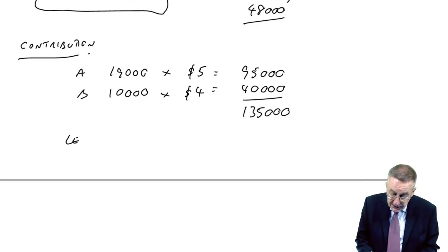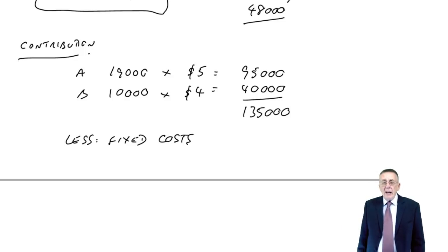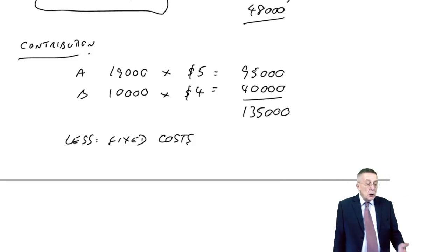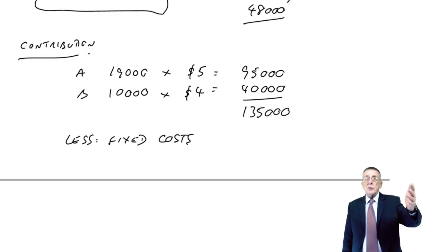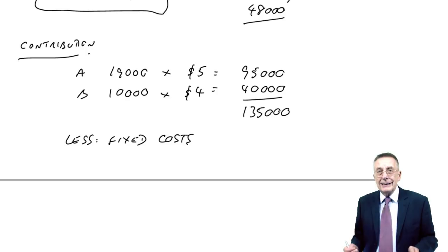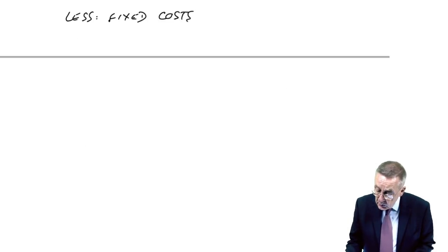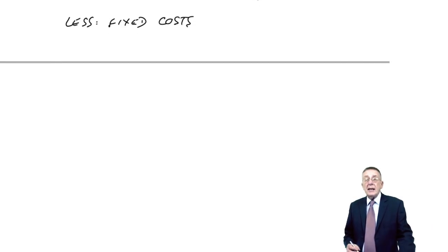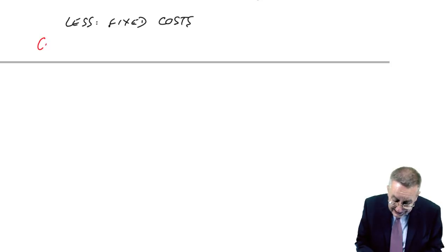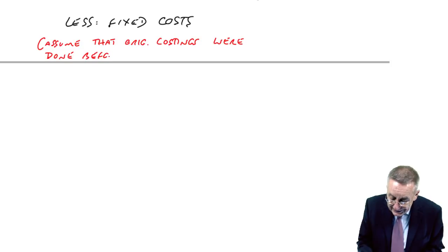The profit though, we're going to have to subtract the fixed costs. Now, here, listen to me very carefully. If this is asked in the exam, probably you'd be told what the total fixed costs were. And if I told you, for example, fixed costs are 100,000 in total, to get the profit you simply subtract 100,000. If they don't tell you, which is unlikely, but if they don't tell you, then we make an assumption.